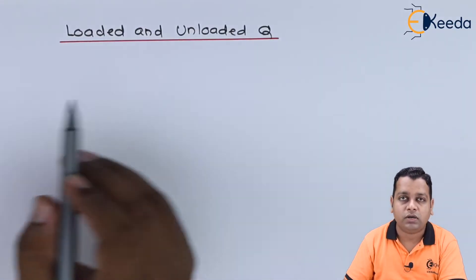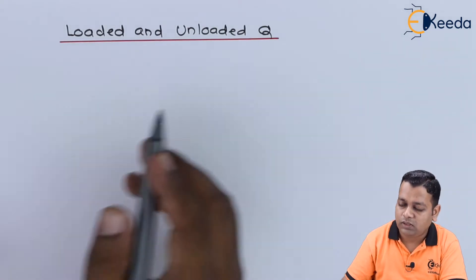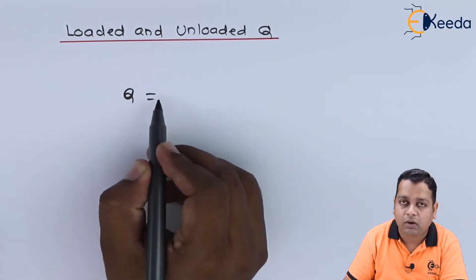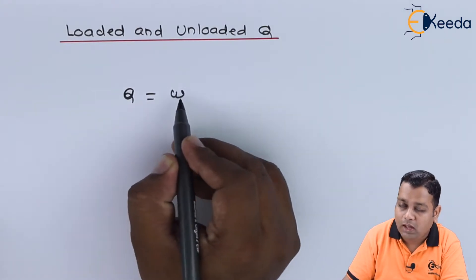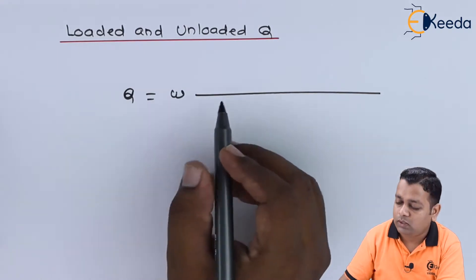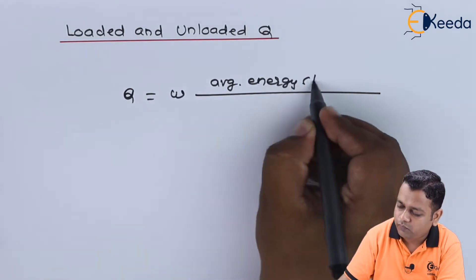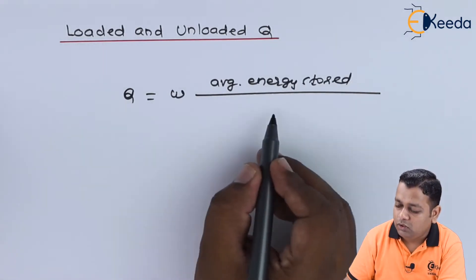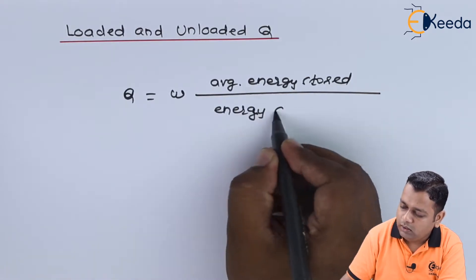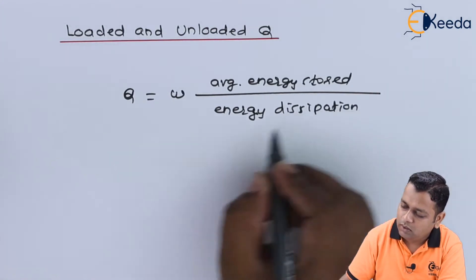The quality factor Q was defined by the equation: Q equals omega (angular frequency) multiplied by the ratio of the average energy stored in the numerator to the energy dissipation per cycle in the denominator.